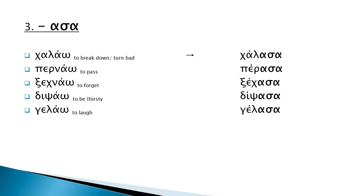And some other verbs change to asa. Like: χαλάω → χάλασα; περνάω → πέρασα; ξεχνάω → ξέχασα; βυψάω → βύψασα; and γελάω → γέλασα.